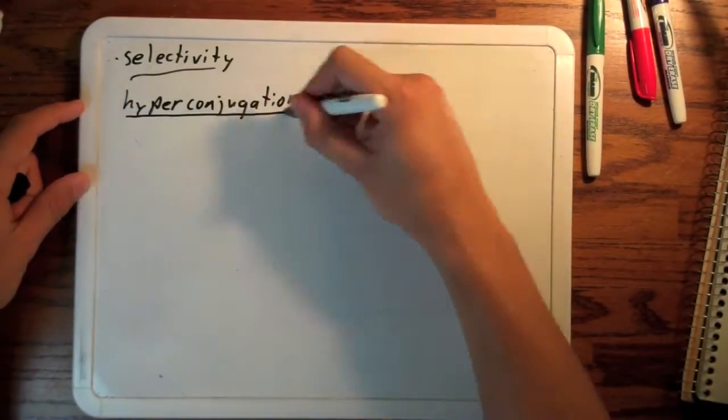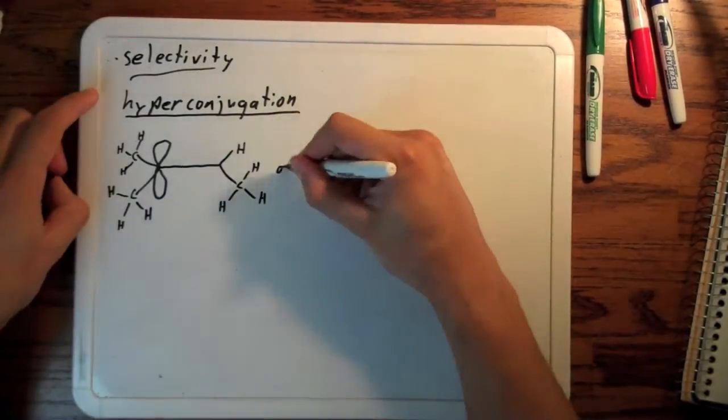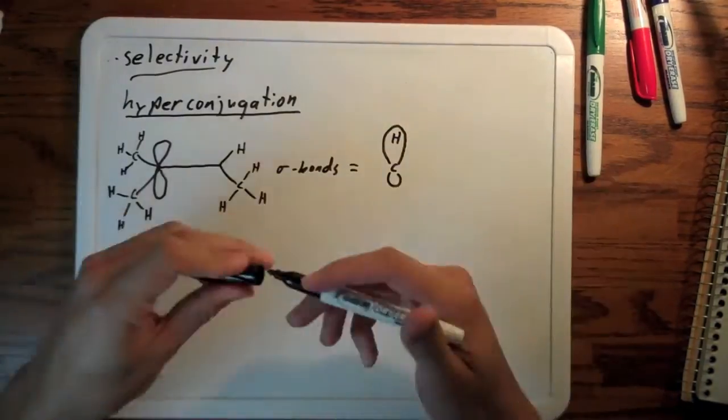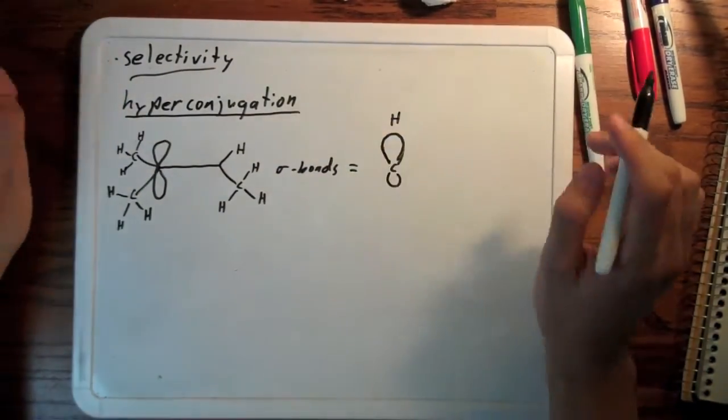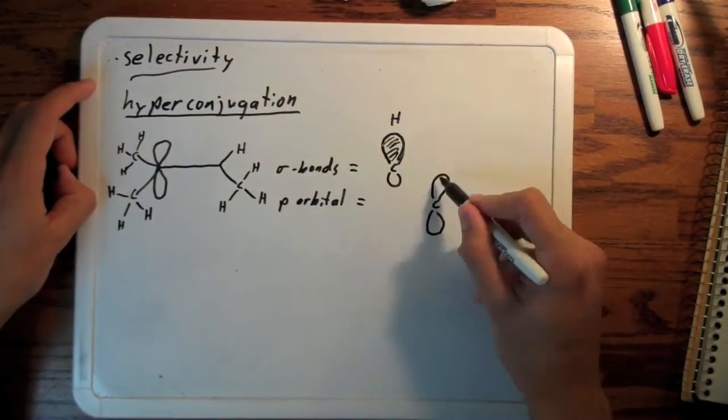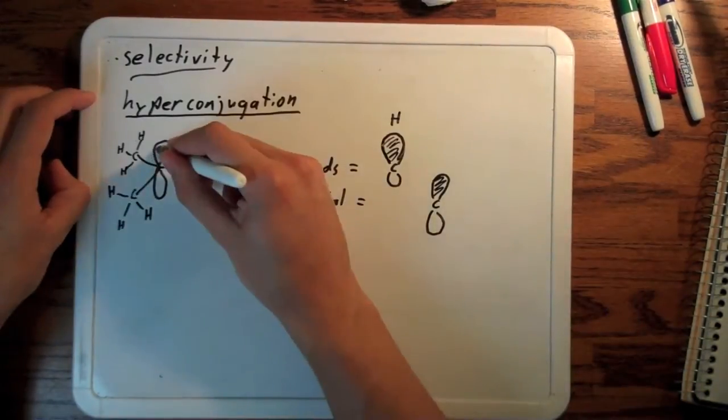Let's look at the actual structure and shape of this carbocation. Something to keep in mind: sigma bonds are shaped generally like this, where the H nucleus is actually outside of the sigma orbital, and you know a p orbital looks something like this.